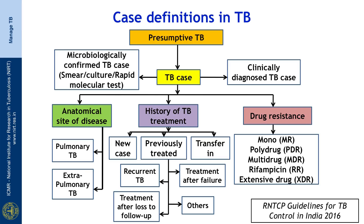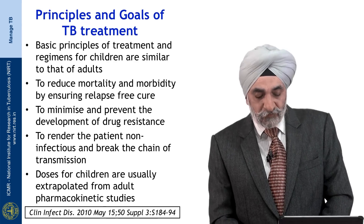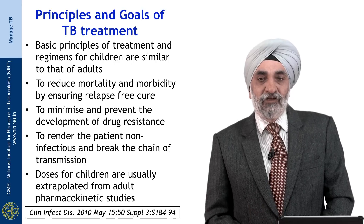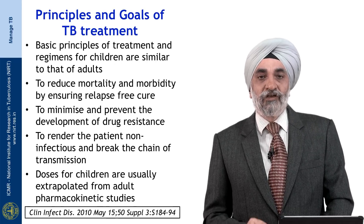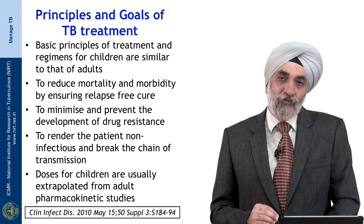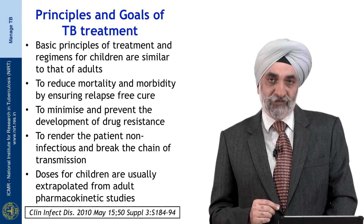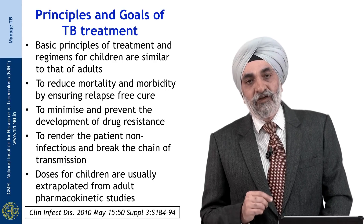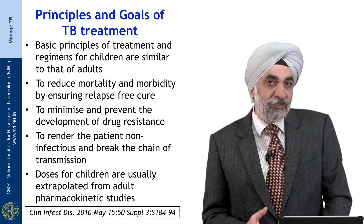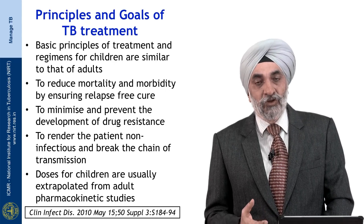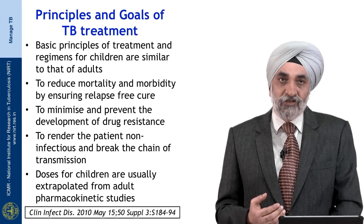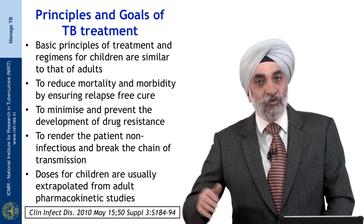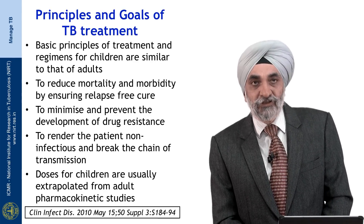Today I am largely going to discuss treatment of the drug-sensitive variety of TB. The principles and goals of TB treatment are very similar in children as in adults: to reduce mortality and morbidity and ensure a relapse-free cure, while minimizing the emergence of drug resistance. You also want to render the patient non-infectious — while many pediatric cases are non-infectious to begin with, some are not, such as those with large cavitary pneumonias — and to break the chain of transmission in the household and community.